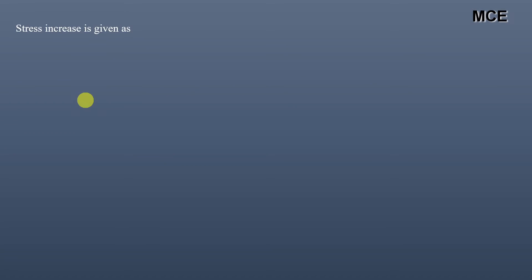The stress increase is given as Q multiplied by (A prime plus B prime), which equals 400 multiplied by (0.37531 plus 0.38091), which equals 302.5 kilopascal. This is the stress increase at a depth of 4 meters and at a radial distance of 0 meters, exactly below the center of the uniformly loaded circular area.